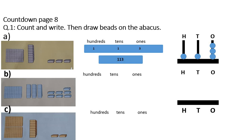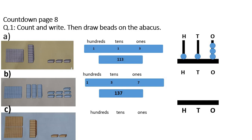This is part B. You will count hundreds: 100. Three tens. And how many ones? 7 ones. So you will write it under these columns and write 137. This is the abacus. How many hundreds? 100 — so you will draw 1 bead. You can also color in these beads. In tens, you will draw 3 beads. In ones, you will draw 7 beads.